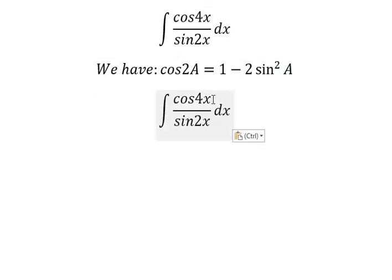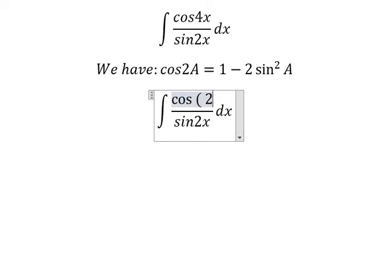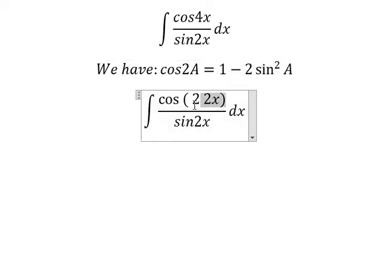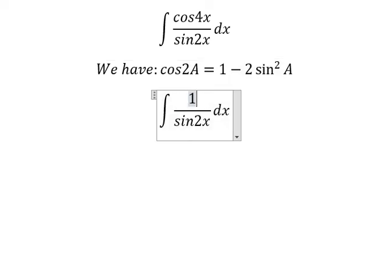Now, cosine 4x—this is 2 multiplied by 2x. We need to convert this using the identity, so we will have 1 minus 2 sine squared 2x.